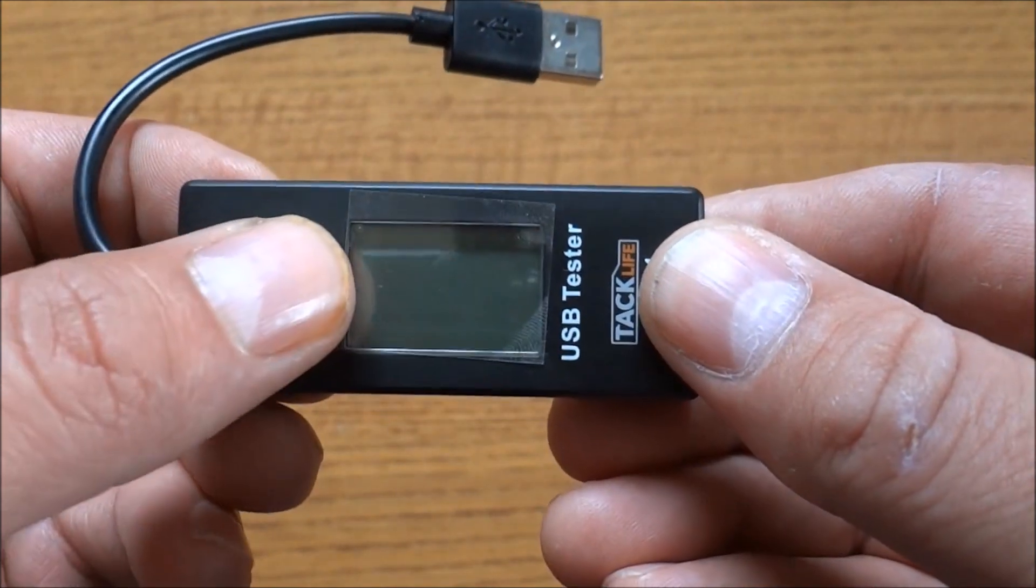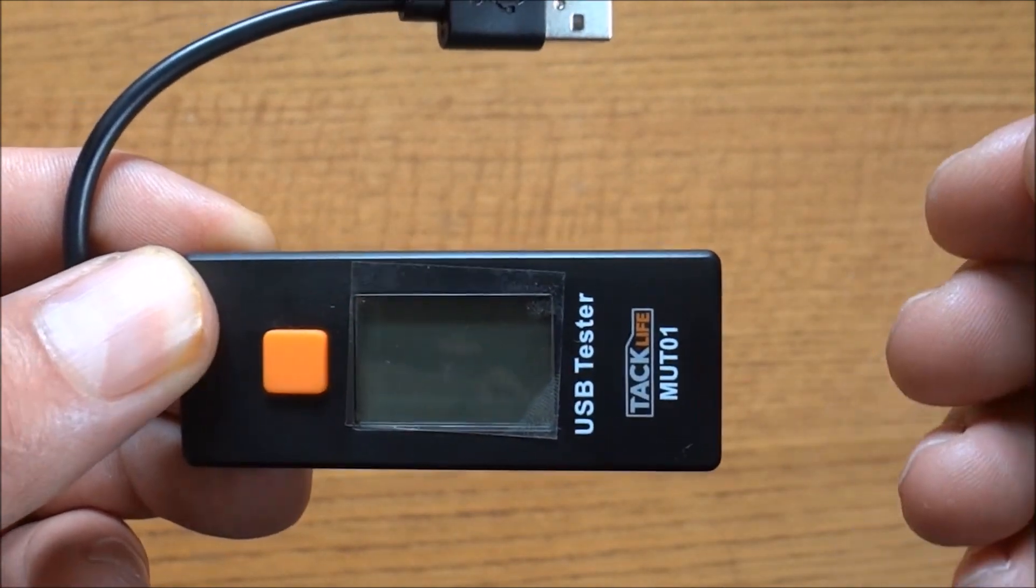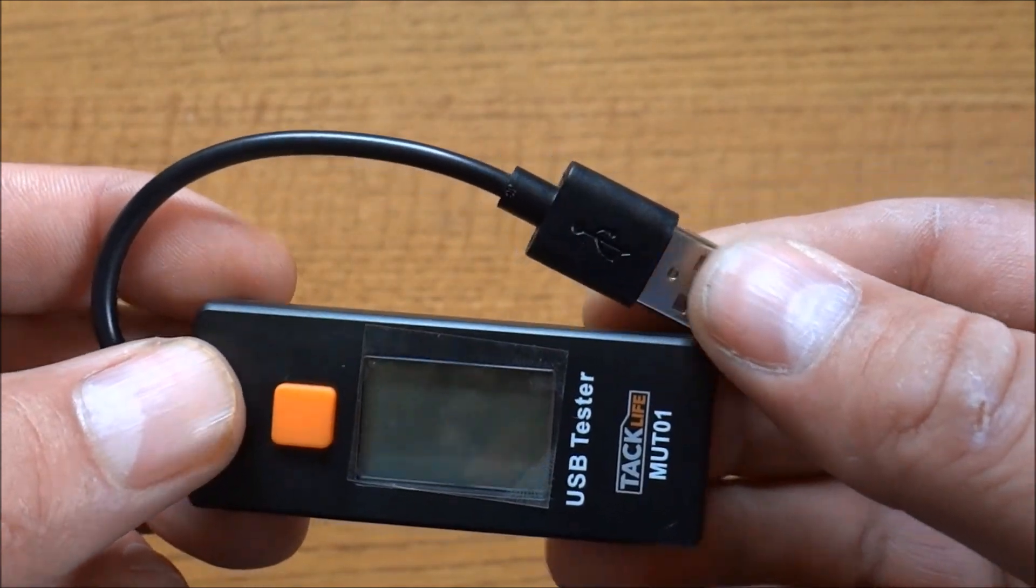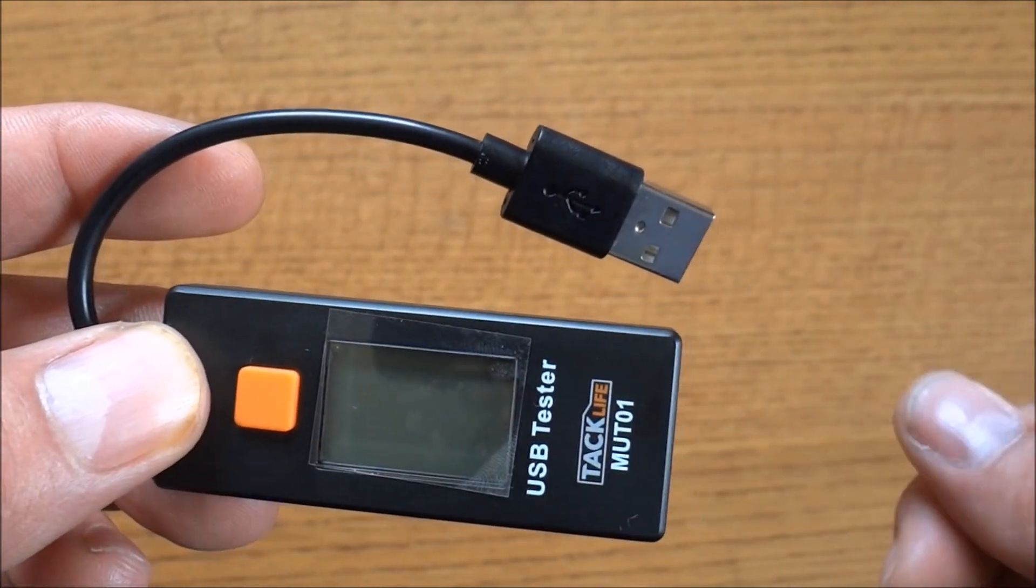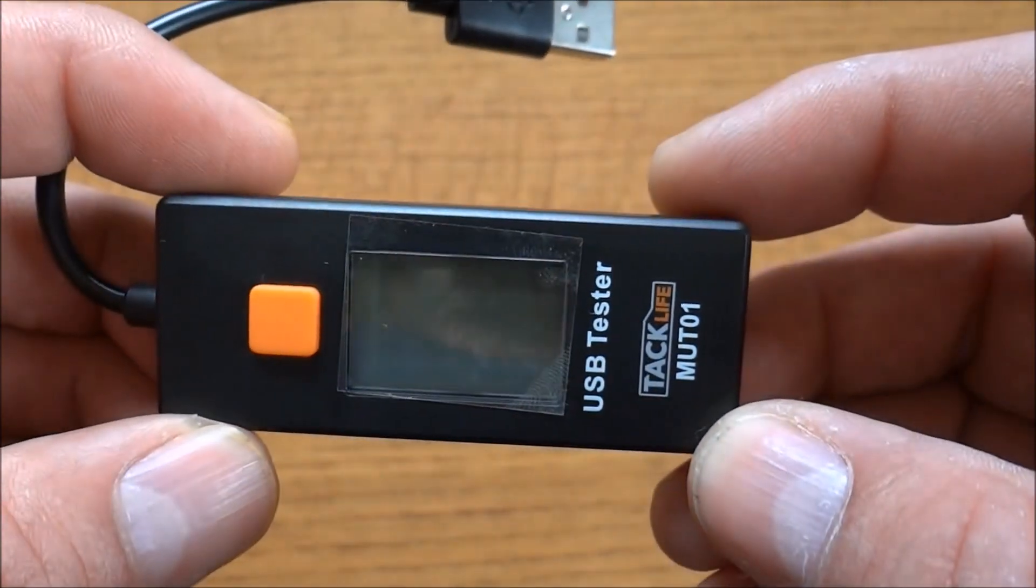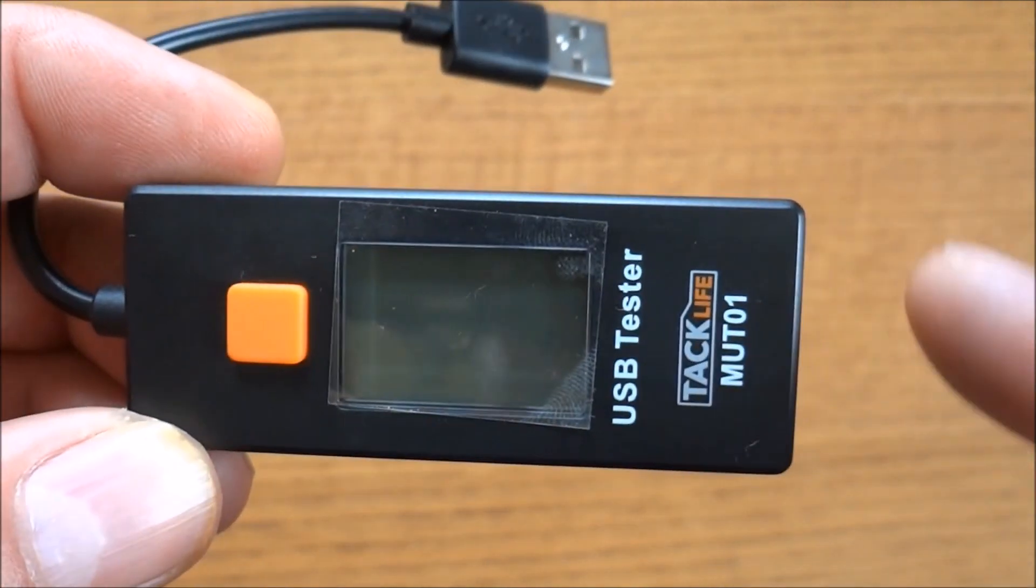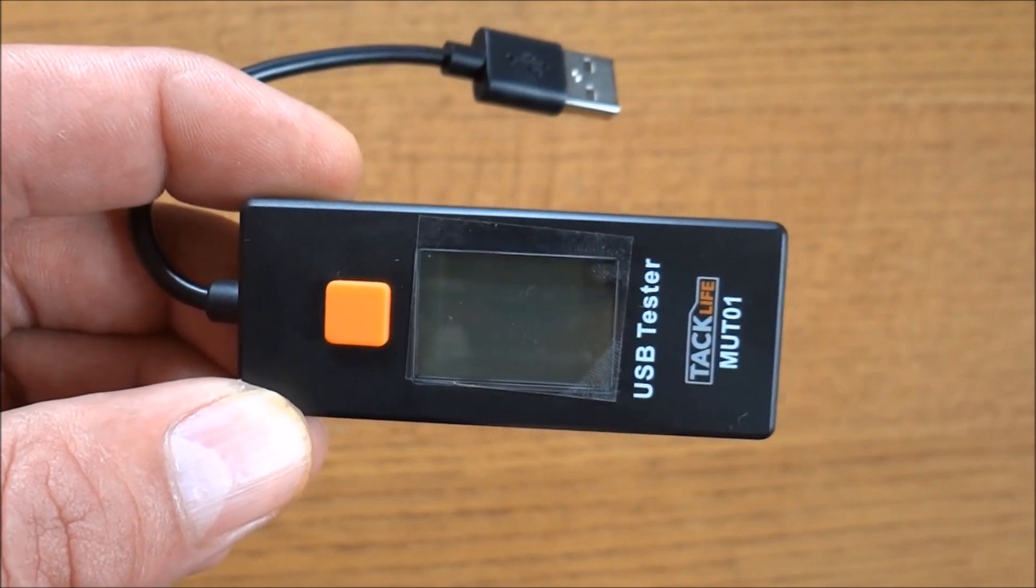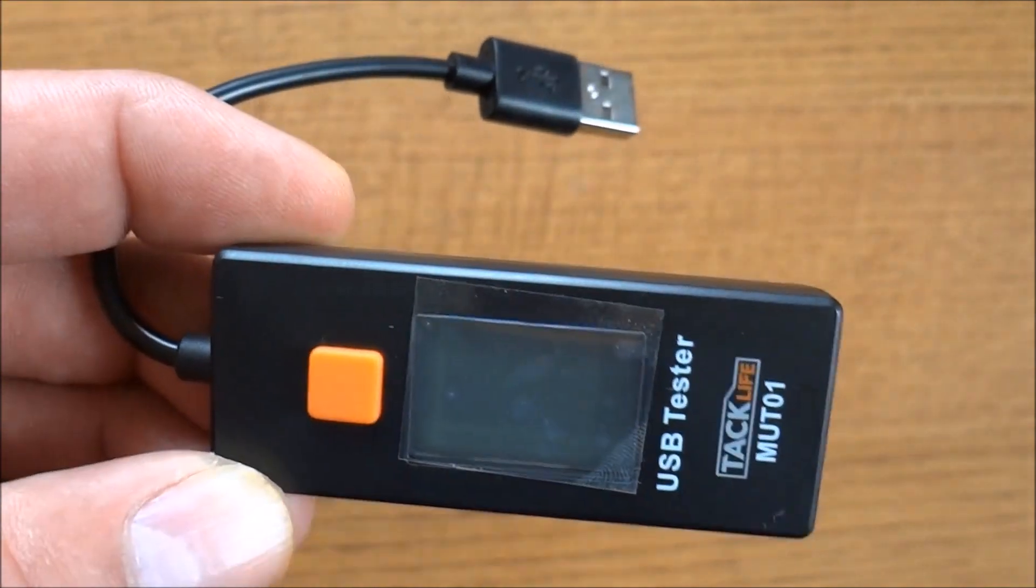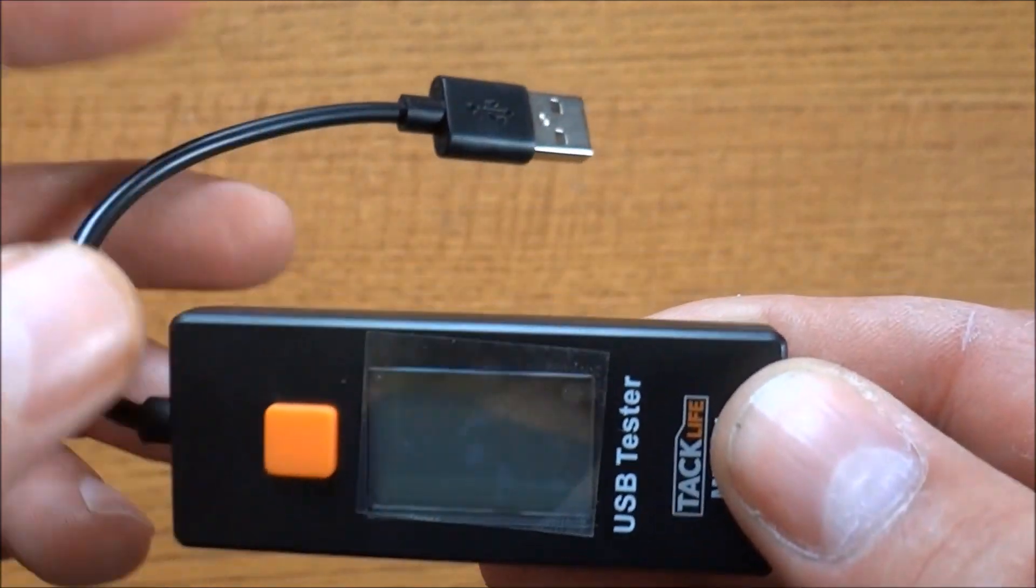This will measure voltage, amps, and milliamp hours. It can handle up to three amps and three to nine volt charging speeds. It stores up to ten sets of information, so if you want to compare some devices together, on number one you would test one device, flip it over to number two, test another device, and then you can go back and forth and see the numbers on those. That's a pretty cool idea.